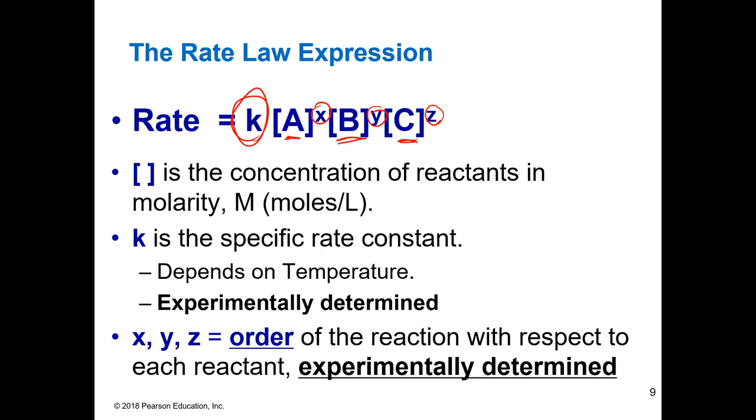You must experimentally determine that. So you really have to run an experiment to see what K is. The X, Y, and Z, the exponents are not based on coefficients or anything else. They must be experimentally determined. So you have to run an experiment, get data, do a calculation to actually find out what those orders are.